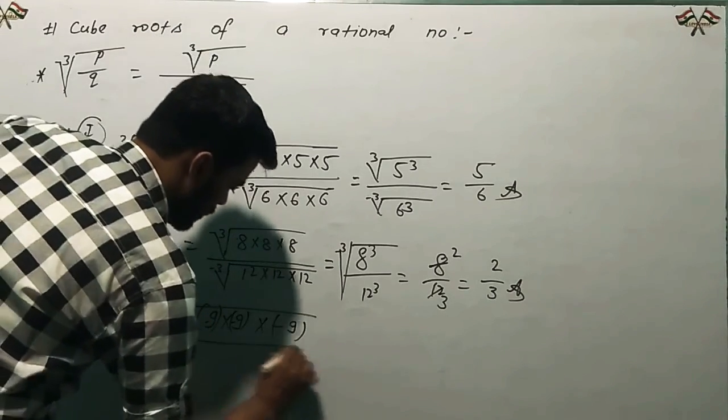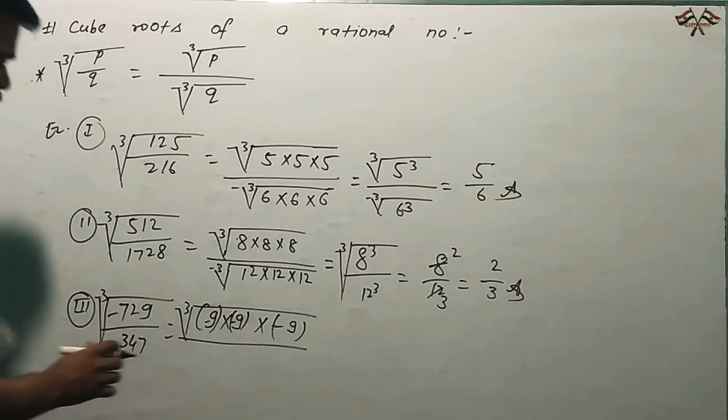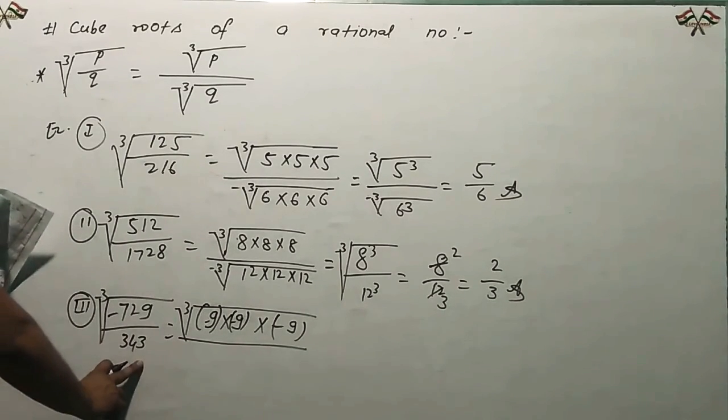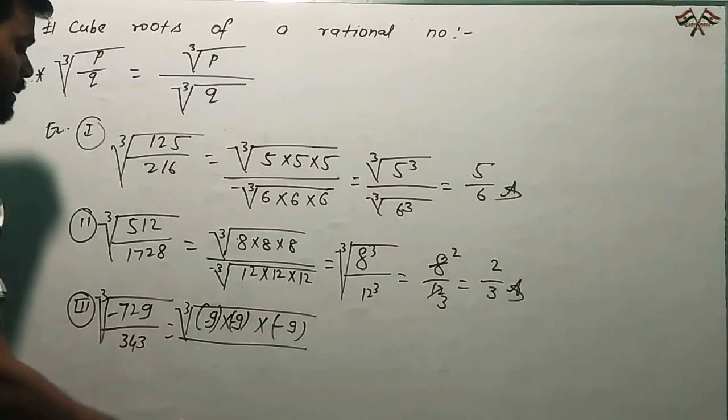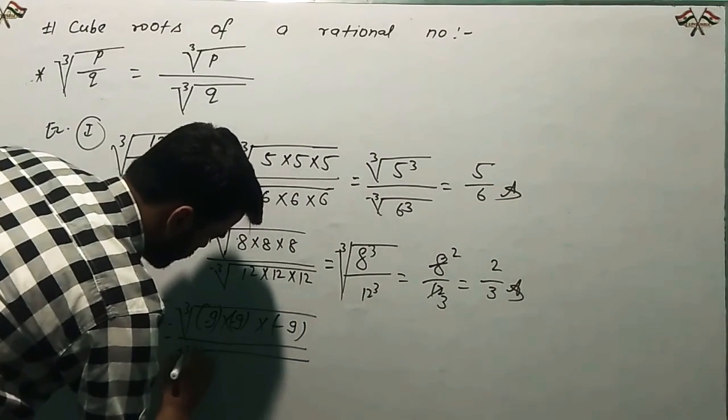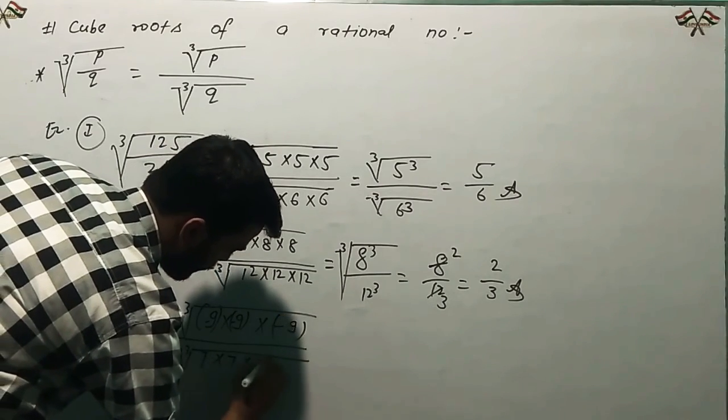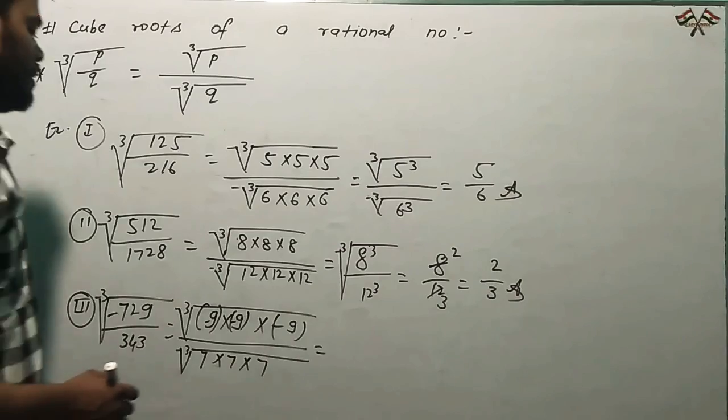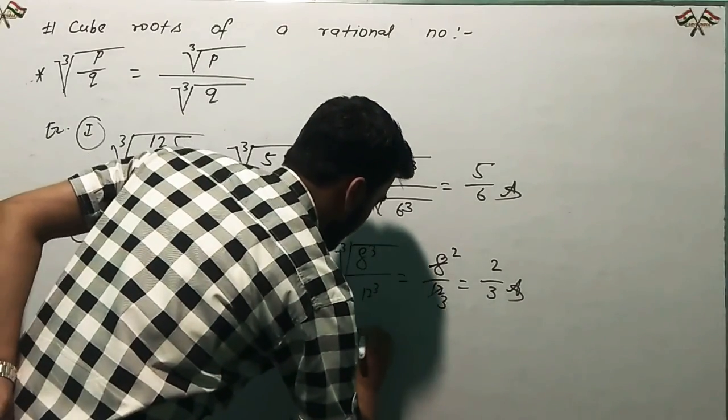And 343 is the cube of 7, which is 7 multiply 7 multiply 7. Finally, this gives us minus 9 upon 7.